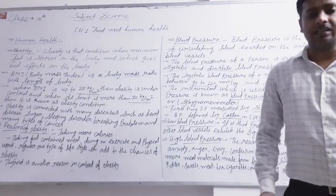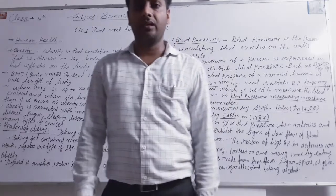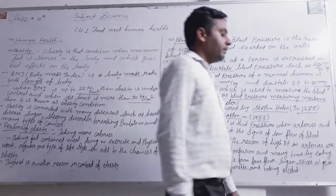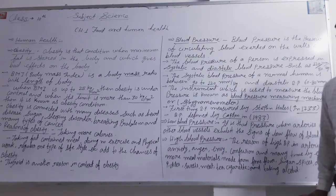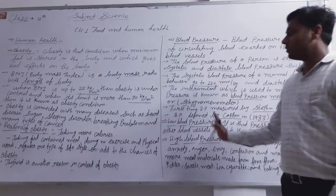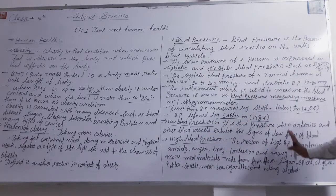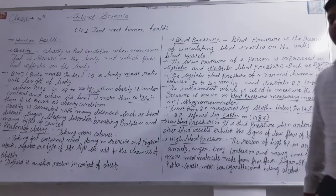To control blood pressure, you should eat potassium-rich foods like fresh fruits. This covers the topics of human health including obesity and blood pressure. Please complete your homework and notes. Thank you.